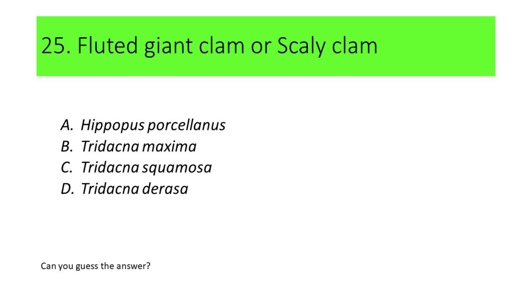Number 25. This species of giant clam is commonly called fluted giant clam or scaly clam. A. Hippopus porcelanus, B. Tridacna maxima, C. Tridacna squamosa, and D. Tridacna derasa. Can you guess the answer?